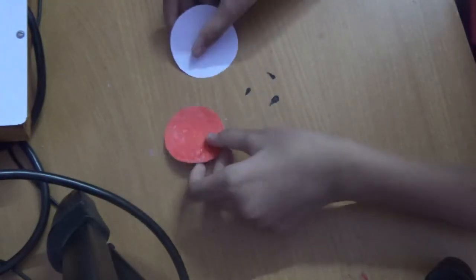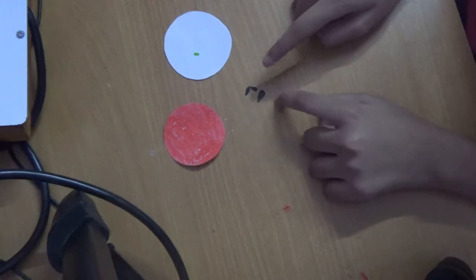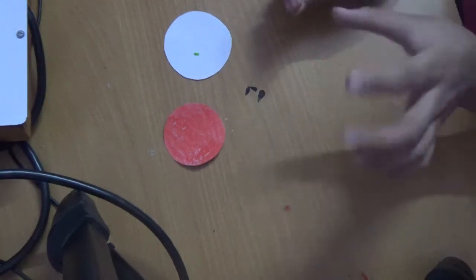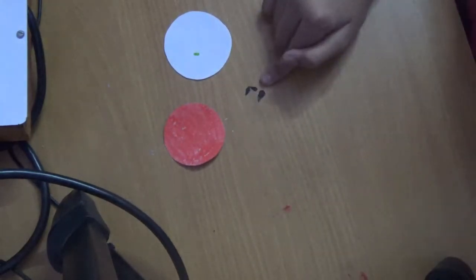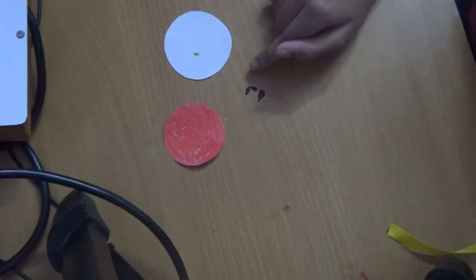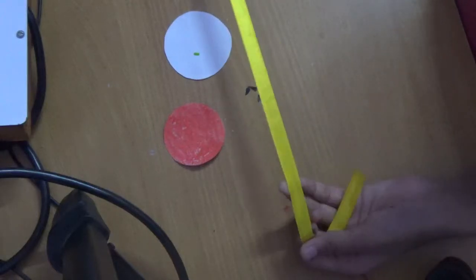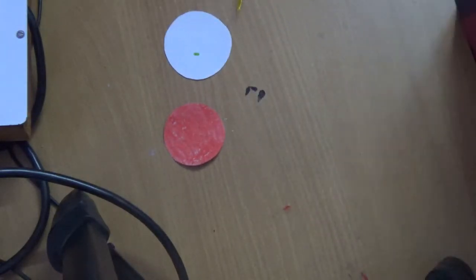We need some paper to make seeds, so that's why we are cutting this. We also need one ribbon and glue.